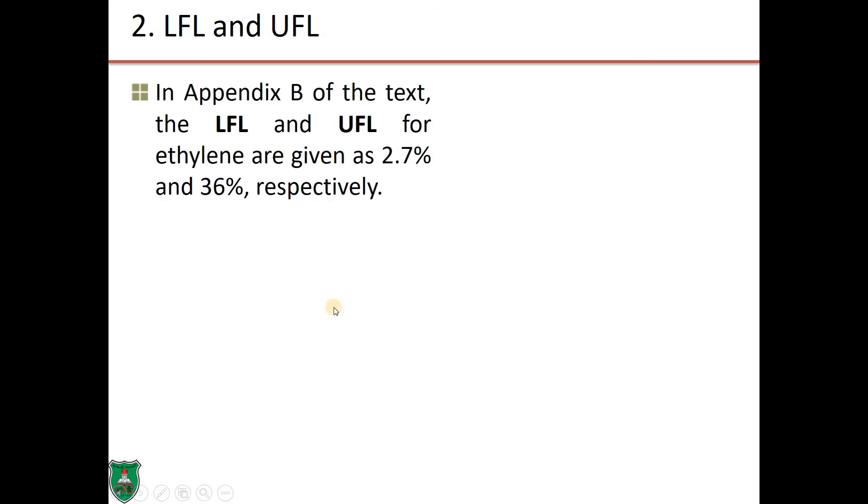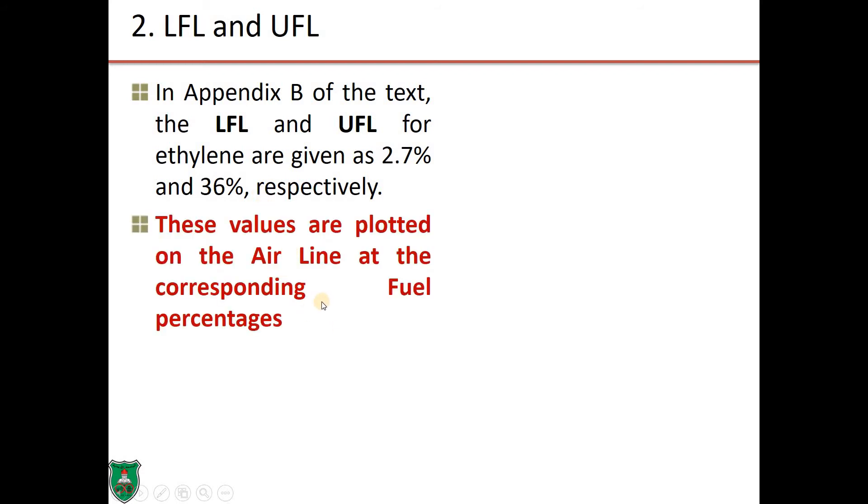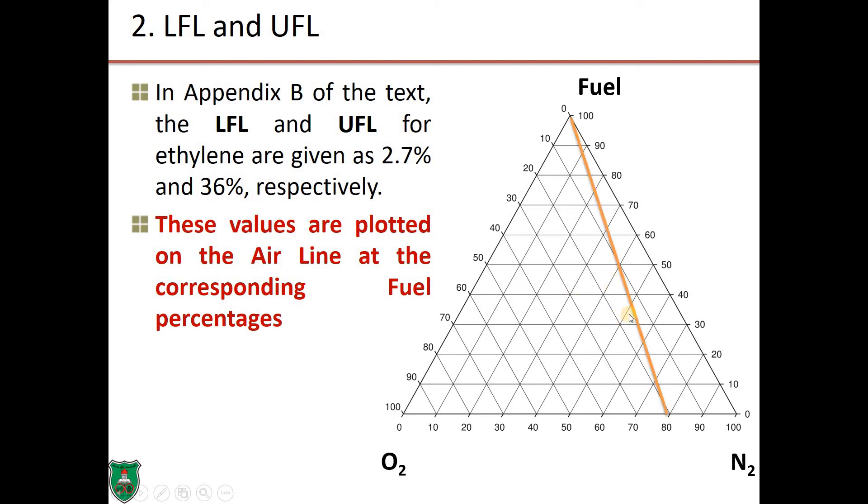The second step is to obtain the LFL and UFL. In your textbook, Crowl, you can get those numbers for ethylene from Appendix B as 2.7% and 36% respectively. We plot those on the airline. Why do we plot them on the airline? Because already those numbers are obtained by burning the fuel in normal air. So, we need to plot 2.7% fuel. It's very close to this baseline opposite of the fuel apex. It should fall here. The UFL is 36%. 36% fuel. If we follow the lines, the horizontal lines now, it should fall in this region. So, we have two points right now identified on this line.